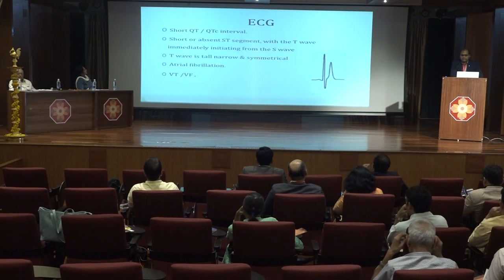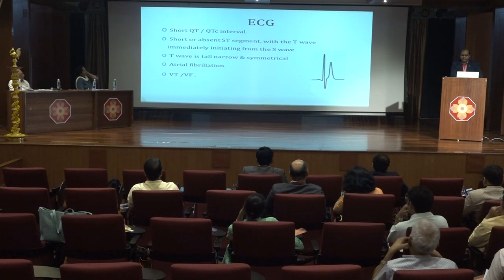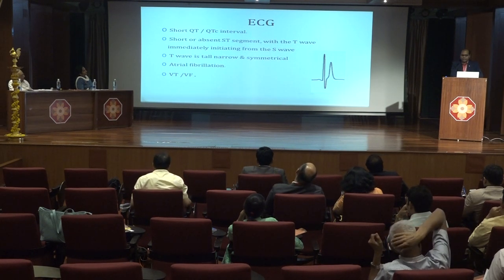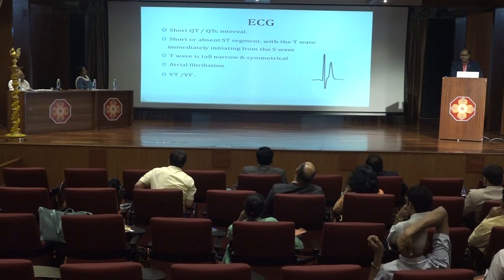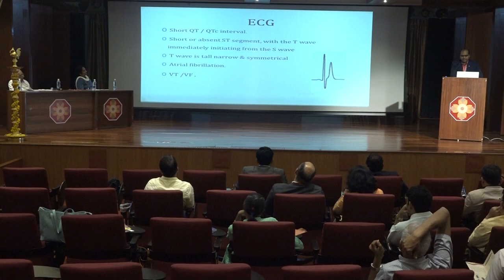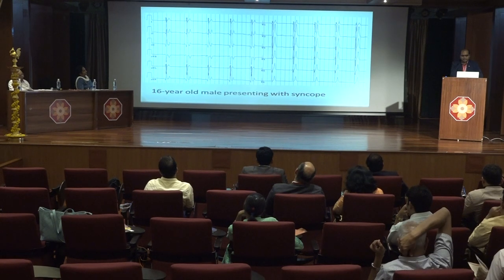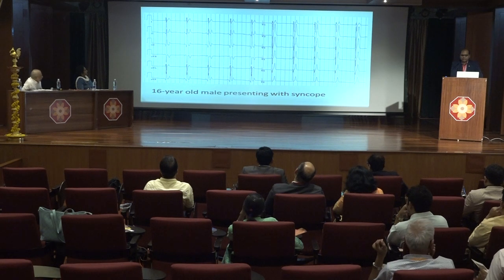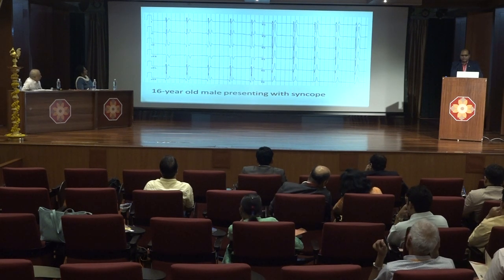The ECG in short QT syndrome is very characteristic: the QT interval is short, the ST segment may be short or absent, and the T wave starts immediately from the S wave. The T wave is tall, narrow, and symmetrical. Patients may have atrial fibrillation, VT, and VF. This ECG from a 16-year-old presenting with syncope shows short QT and the tall, narrow, symmetrical T waves.